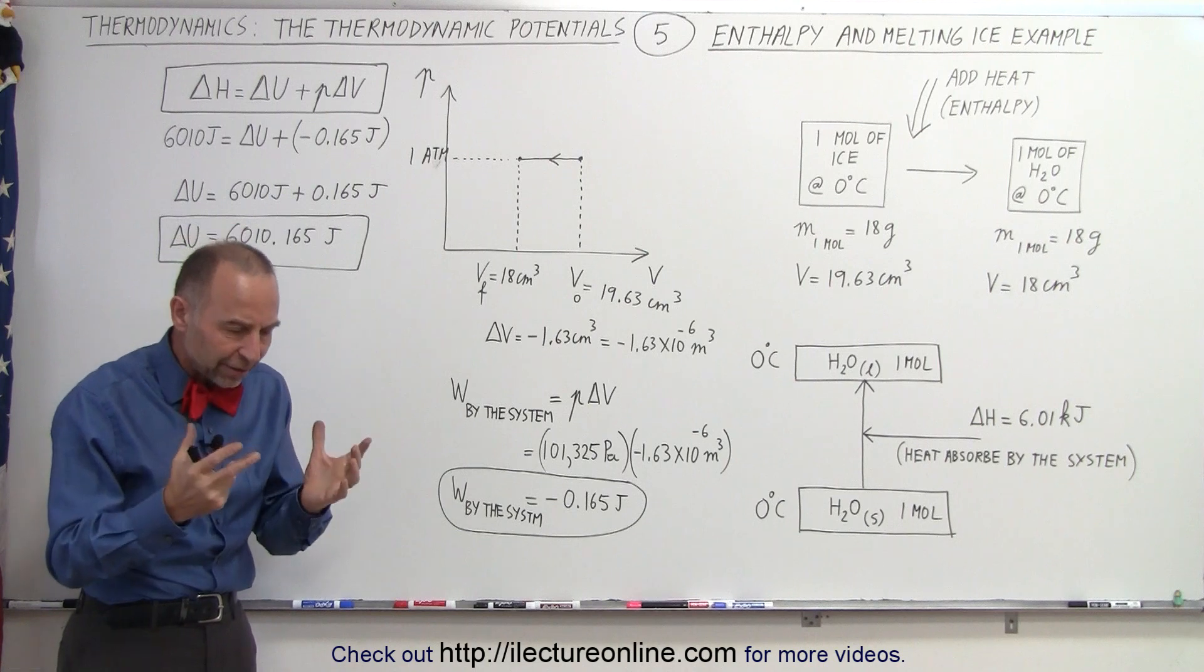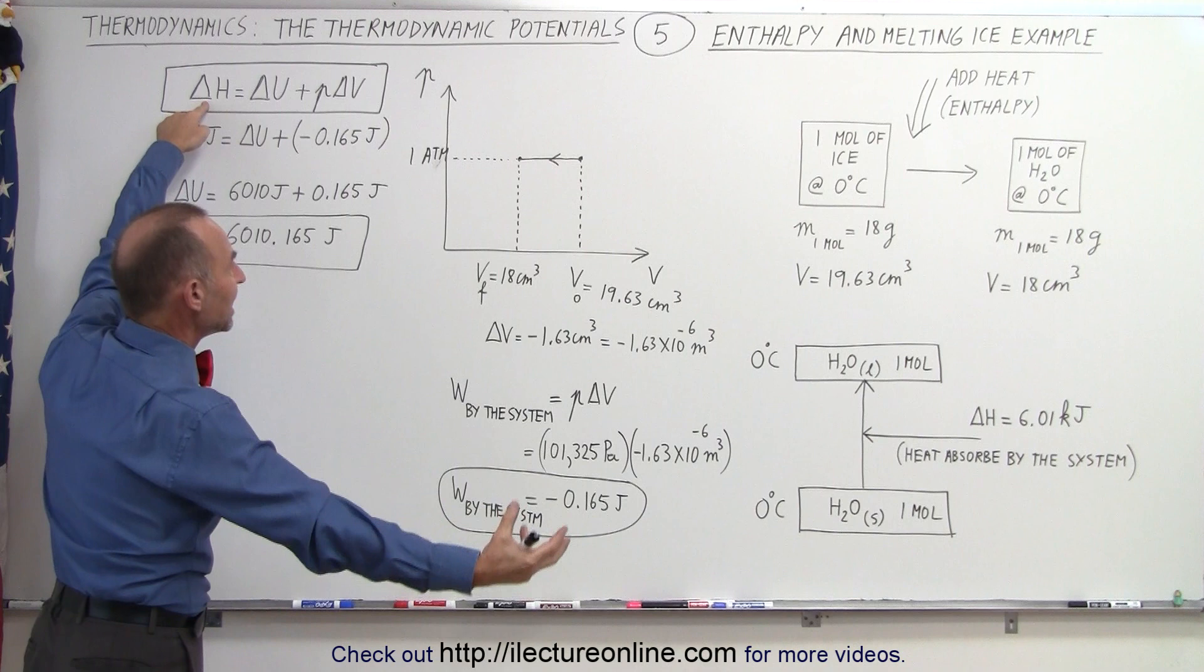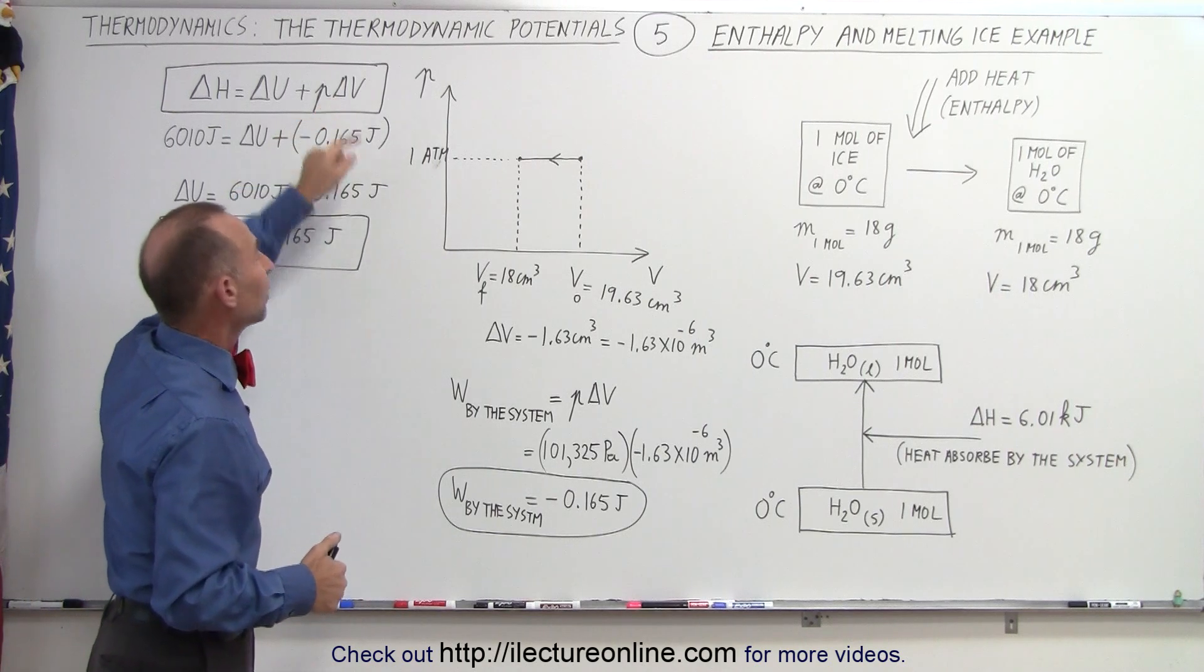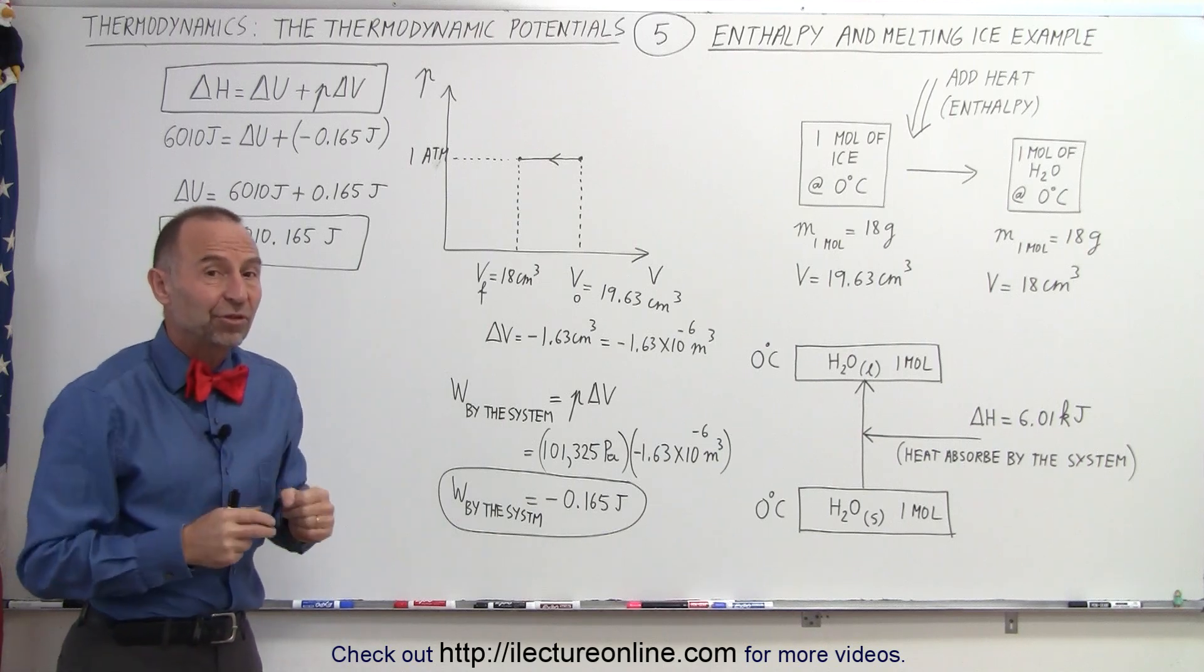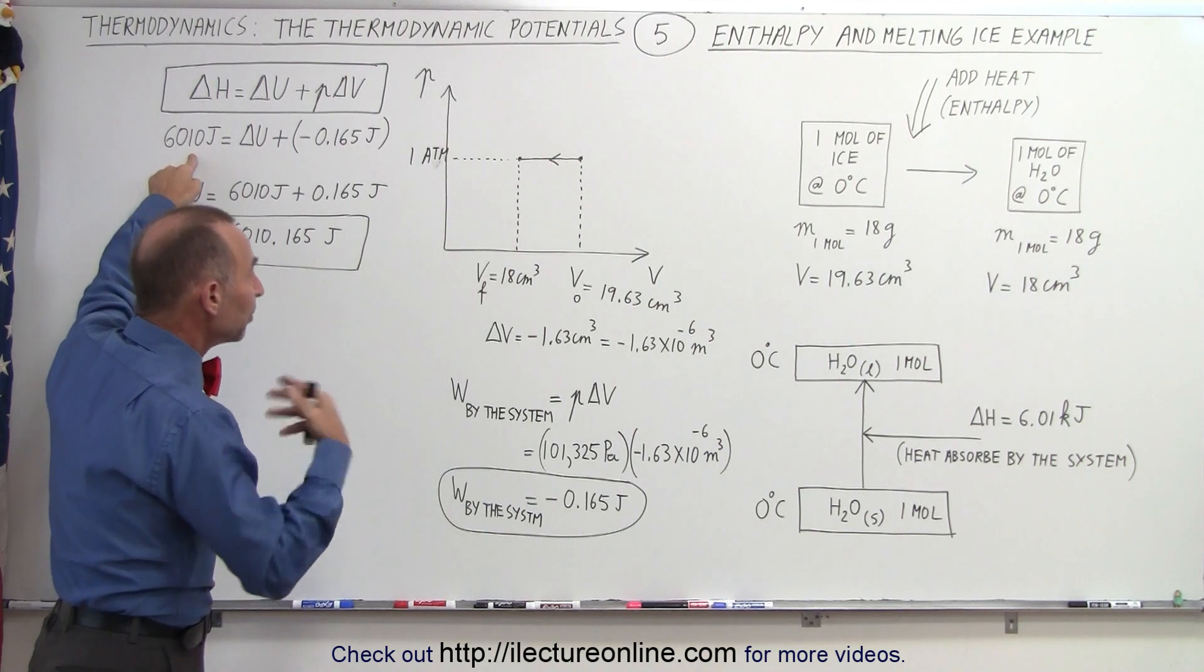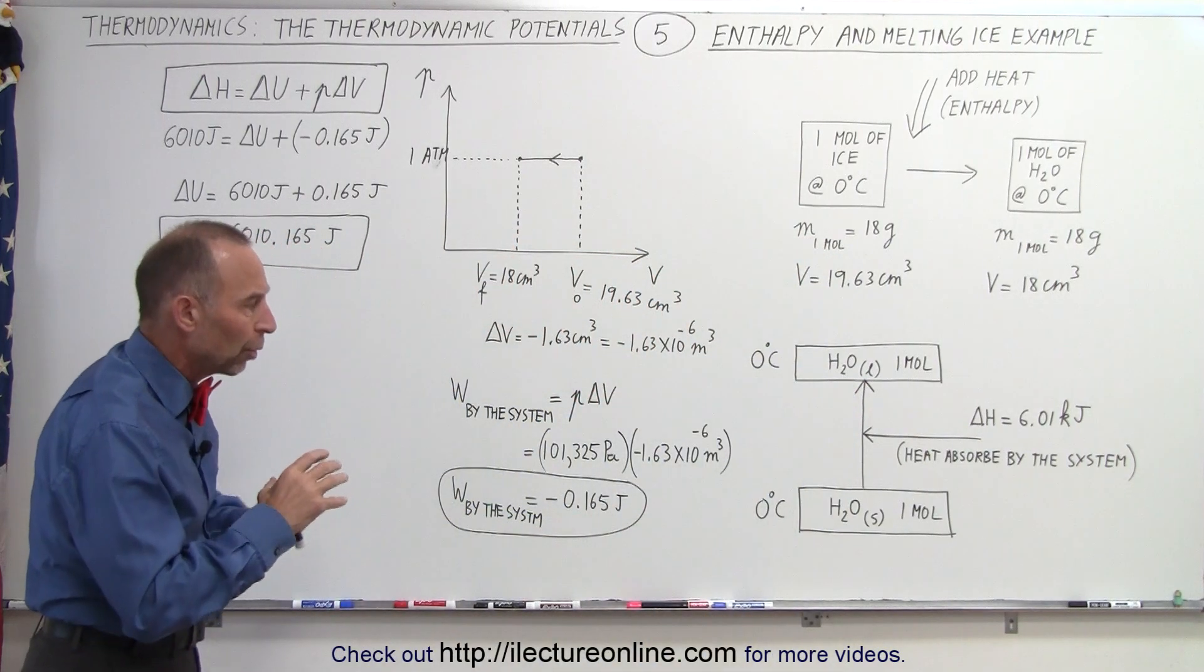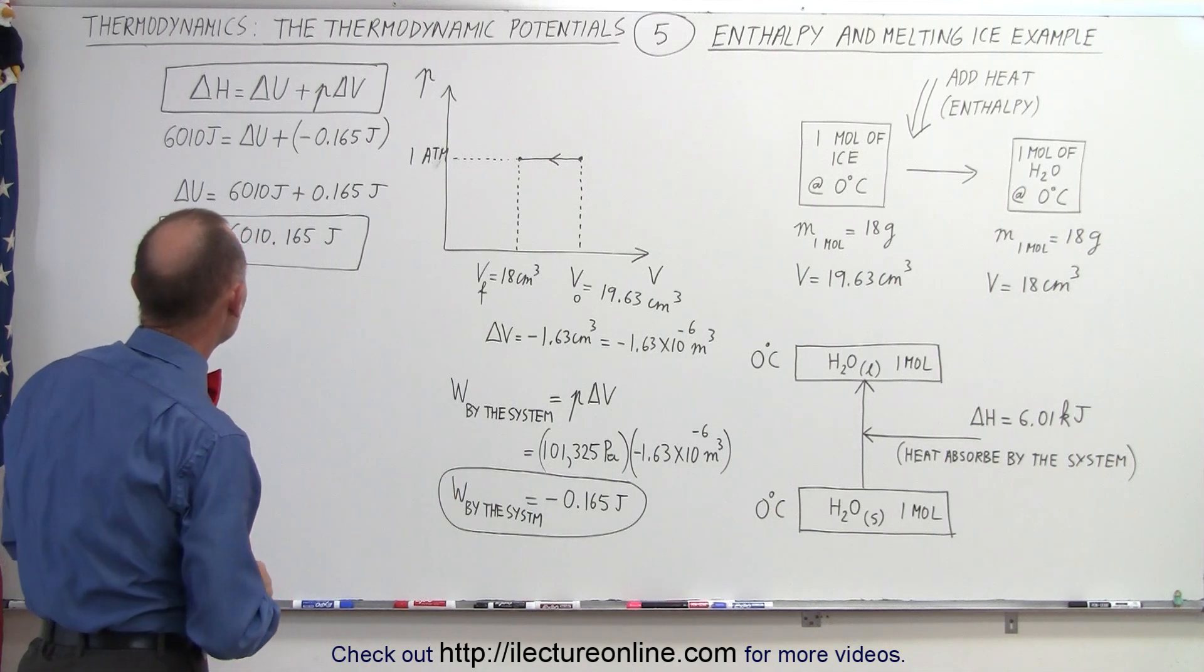Now let's put that in context with the concept of enthalpy. Enthalpy is defined as the amount of heat added or removed from the system. Delta U is defined as the change in the internal energy of the system. And P delta V is defined as the work done by the system on the atmosphere. In this case, that's now going to be a negative quantity. We know what the enthalpy is because we have learned from experimentation that it requires 6,010 joules to melt one mole of ice and turn it into one mole of water at 0 degrees centigrade.